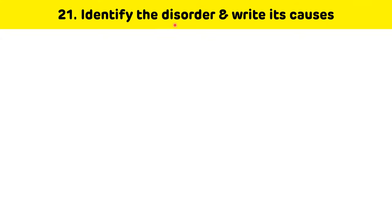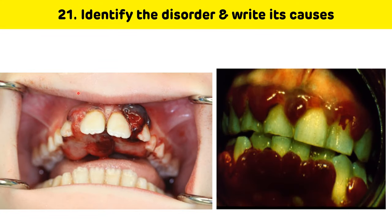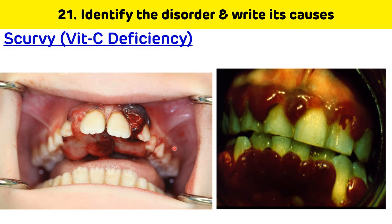Identify the disorder and write its causes. This case is associated with vitamin C deficiency, which is called scurvy. There is bleeding of the gums and loose teeth. So this is scurvy, which is associated with vitamin C deficiency.